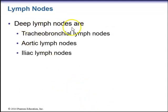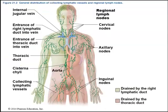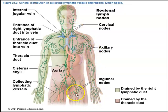We have deep lymph nodes located in the tracheobronchial, aortic, and iliac regions. The next figure shows the location of regional lymph nodes — cervical lymph nodes in the neck, axillary lymph nodes in the armpit area, and inguinal nodes located around the pelvis or groin.